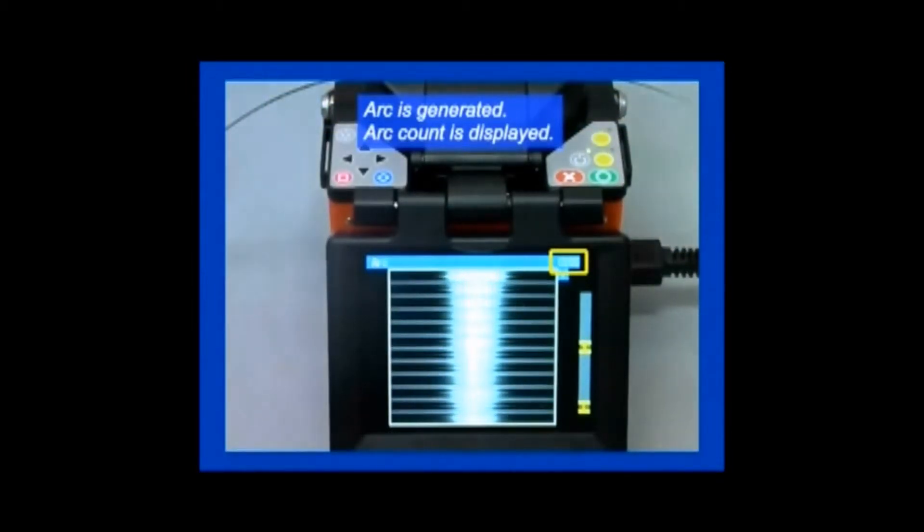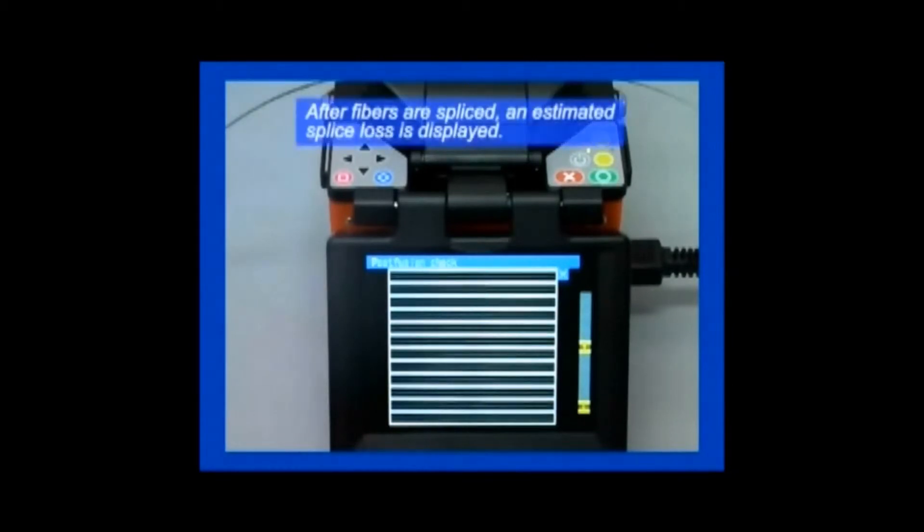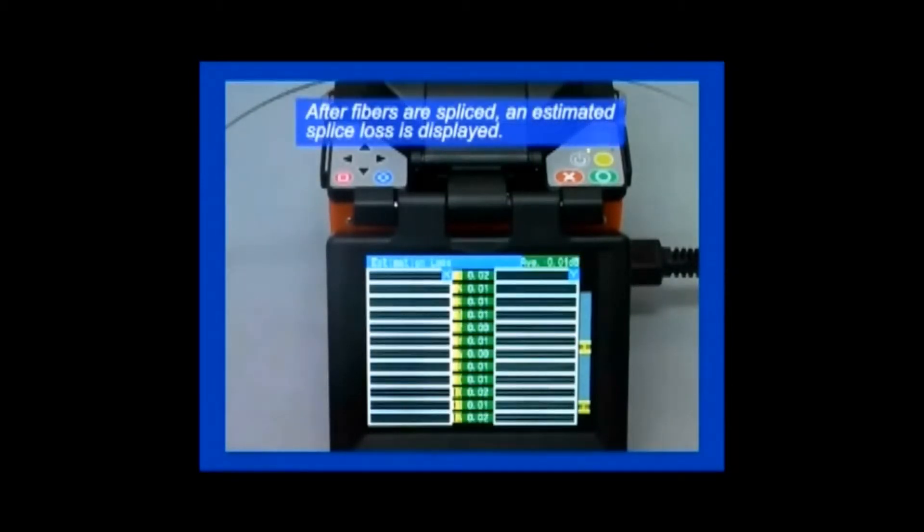An arc is then generated and an arc count is displayed. After the fibers are spliced, an estimated splice loss is displayed, usually about one or two one-hundredths of a dB of loss for the completed fiber splice.